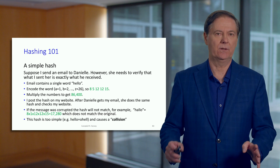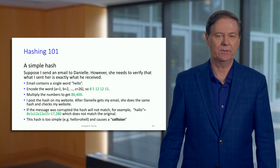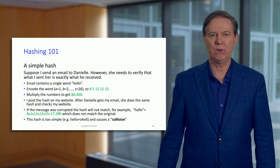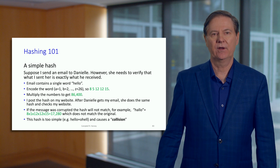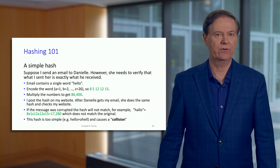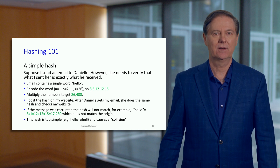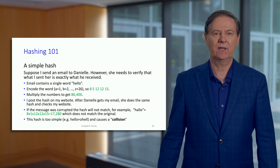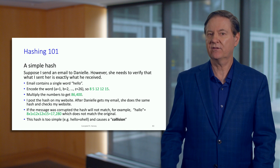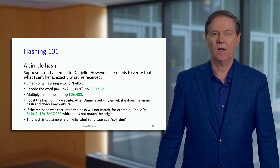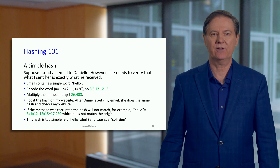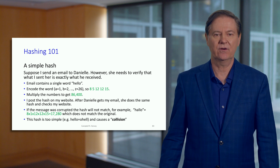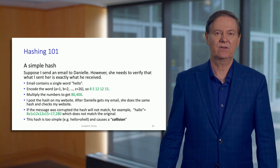But this simple hashing algorithm is unsatisfactory — it's way too simple. It is subject to what's known in the hashing literature as a collision, where two different inputs, two different words, give the same hash. For example, suppose an adversary intercepted the message and changed it from 'hello' to something with a very different meaning: 'oh hell.' When Danielle gets that message and does the cryptographic hash, she gets 86,400 and has no idea the message has been corrupted.